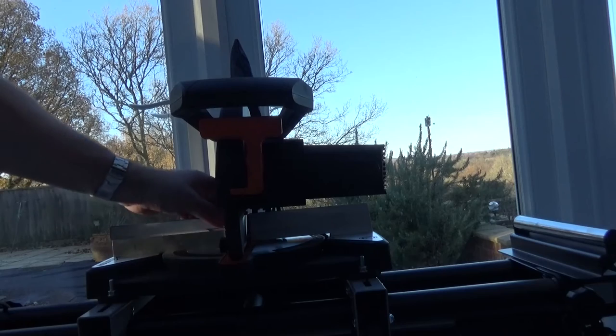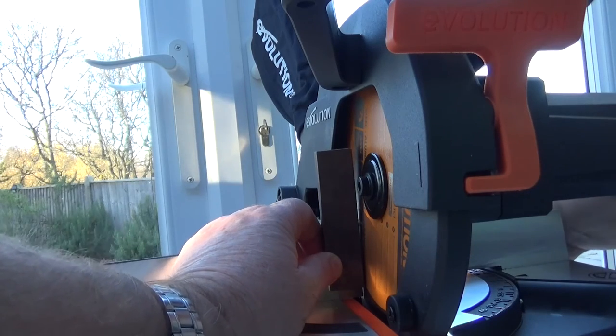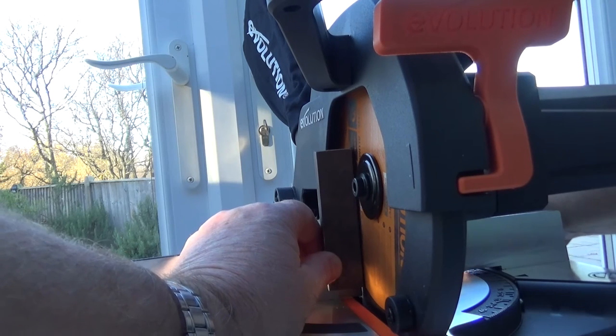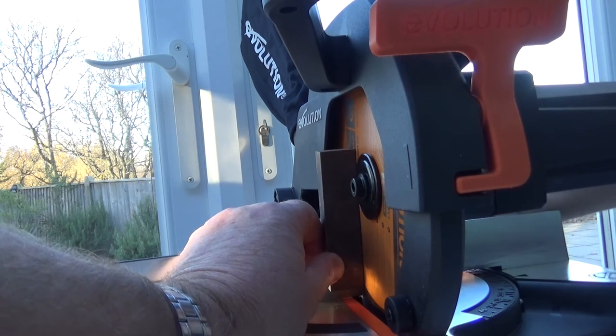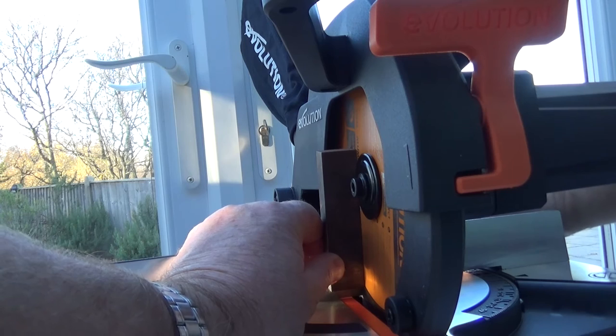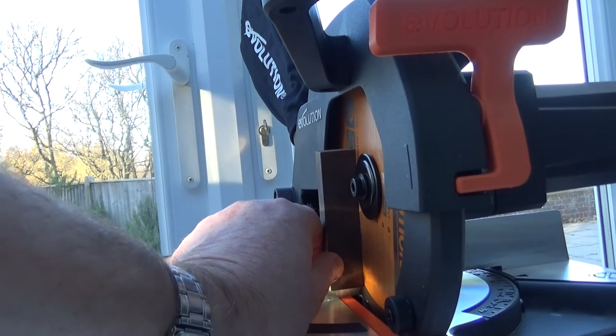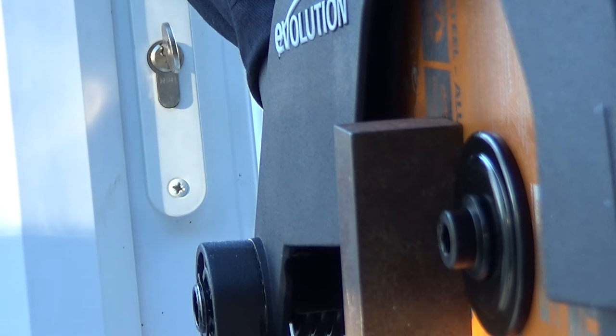I'm putting my set square back in and I'm going to turn the set screw now. You can see it's moving that saw up and we want no light between the blade and the set square. Now that looks absolutely spot on, so we've got to clamp that in position and then we'll check it again once we've clamped it.